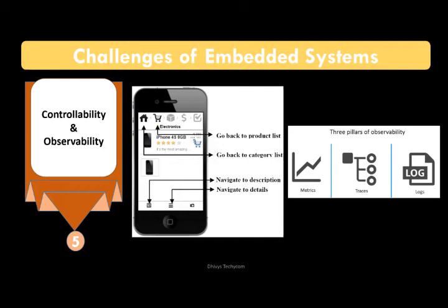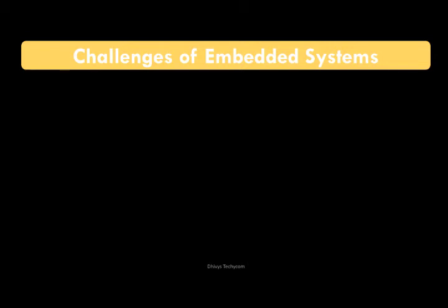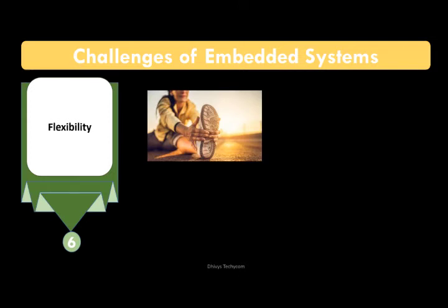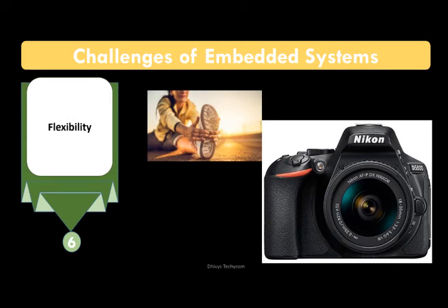The sixth important challenge is flexibility — being easy to operate and easy to use. A good example is digital cameras: there is a USB port so you can connect it with computers or printers. Devices can also connect via Bluetooth and Wi-Fi. Because technology has improved, hardware must be easy to adopt to meet user expectations. Flexibility is something users are highly demanding these days.